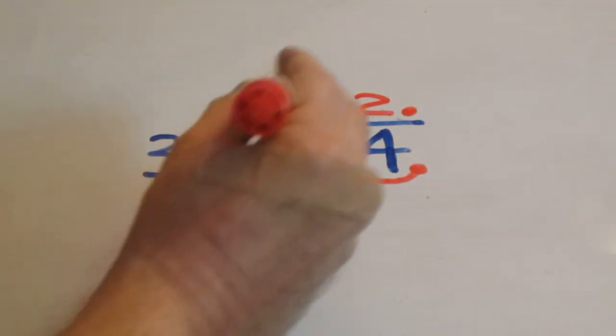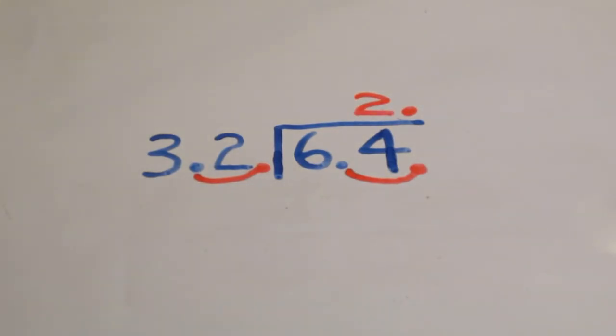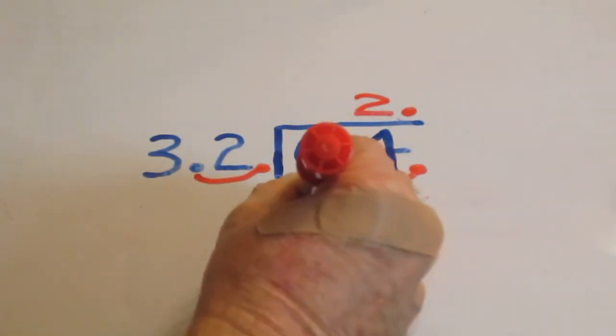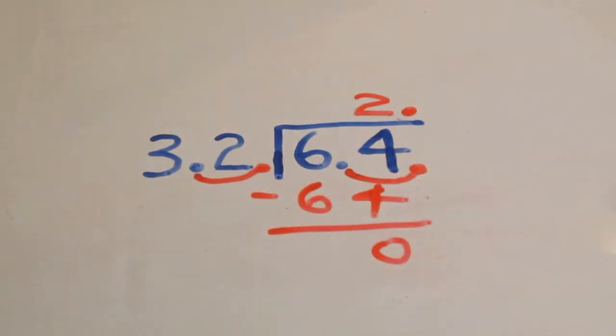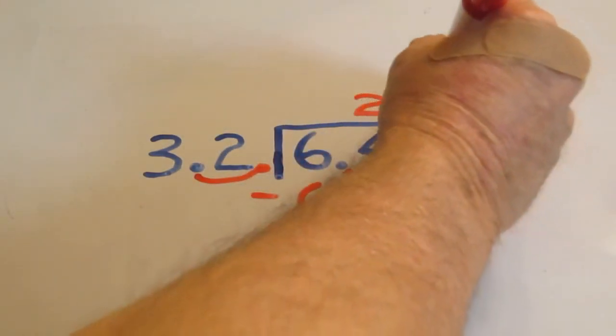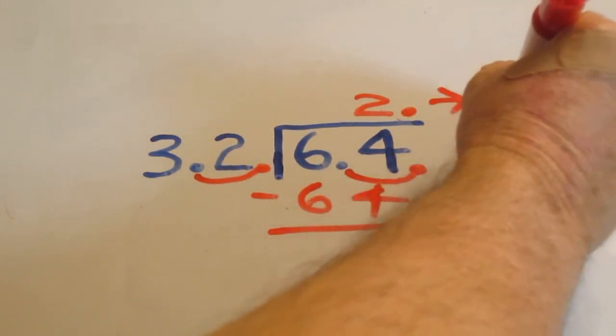Take 32, multiply it by 2 to get 64. Subtract to get 0. And our final answer is 2.